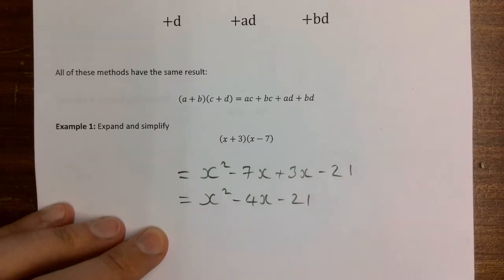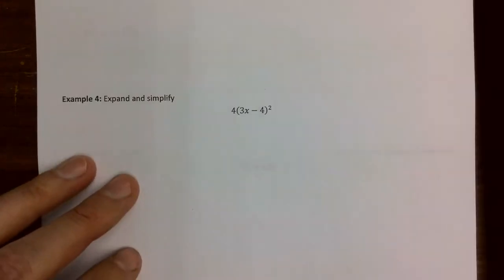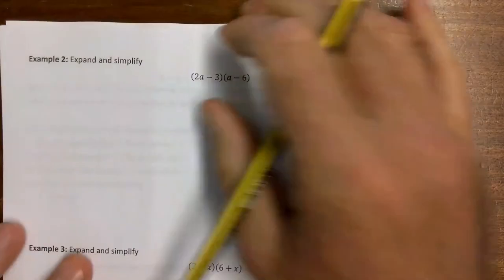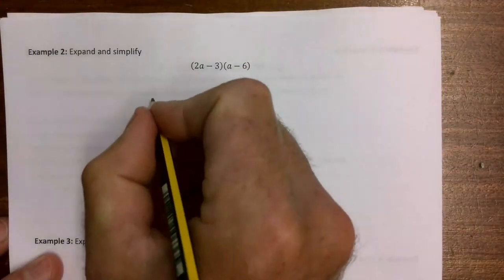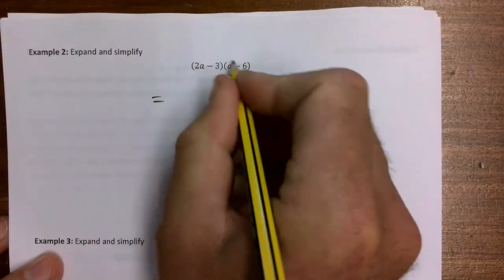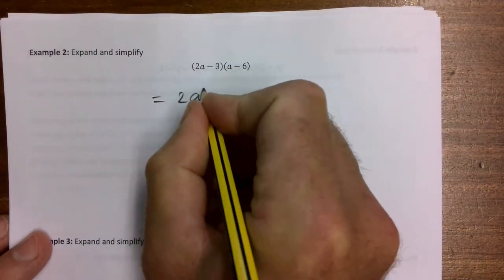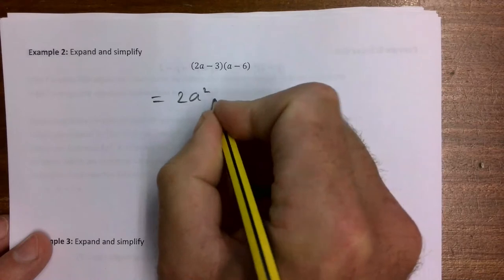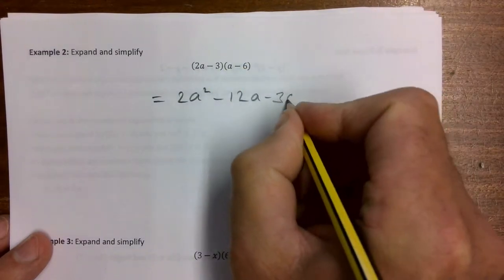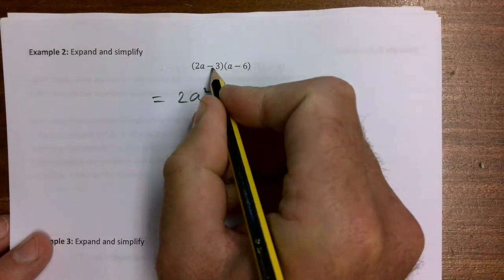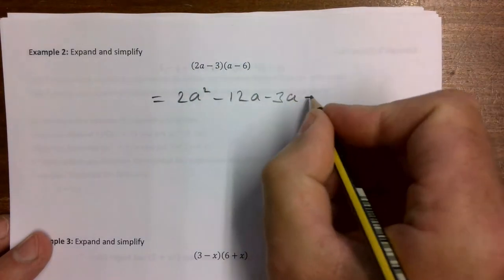Next example: 2a minus 3 times a minus 6. Again using FOIL, 2a times a gives me 2a squared, outer is minus 12a, inner is minus 3a, and last is minus 3 times minus 6, which gives us a positive 18.